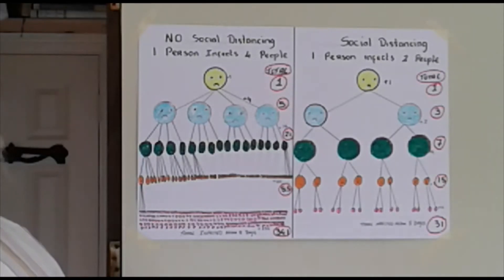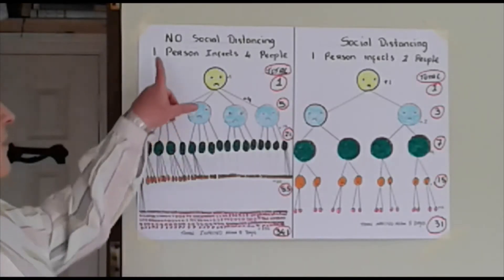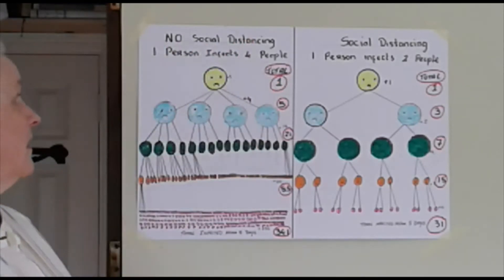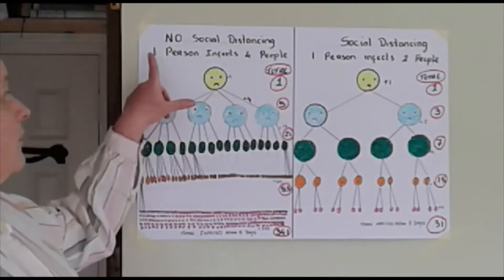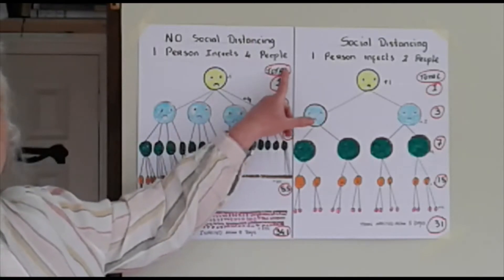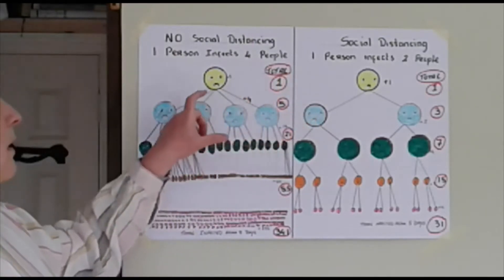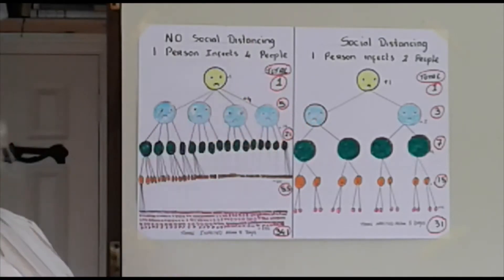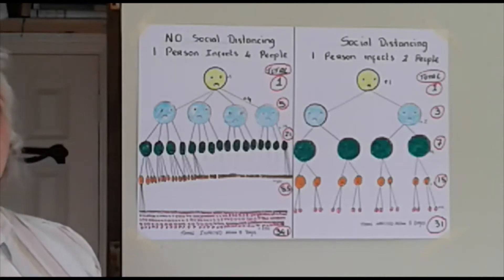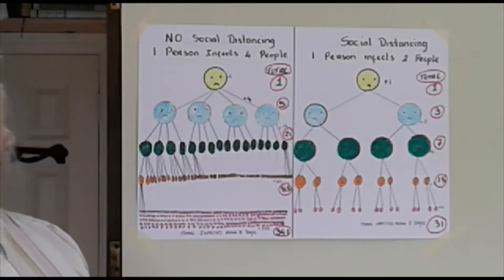So I'm going to use the first example. My first example is someone who's not social distancing, and this one person infects four people. You might hear 'R4' or 'R0 of 4', which means four people infected by one person.